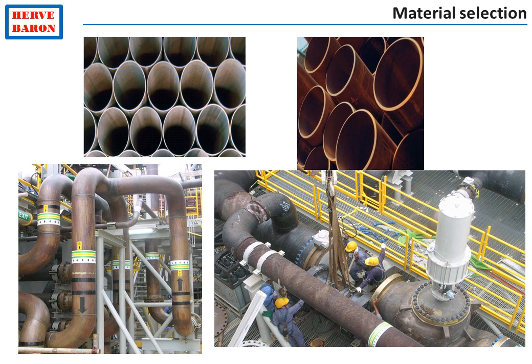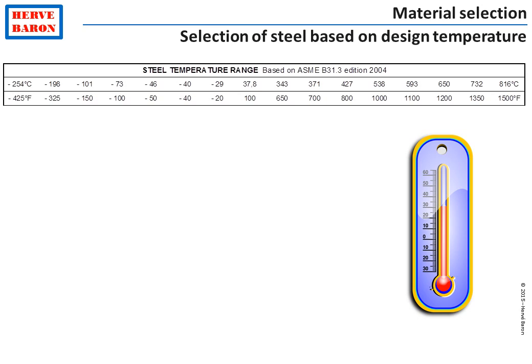The second parameter that comes into play when selecting material of construction is the fluid temperature. Both high and low temperatures must be taken into account. Carbon steel is suitable for a temperature range between minus 29°C to 427°C only. Below that, low temperature carbon steel and then alloys up to stainless steel need to be used. Above that, stainless steels also have to be used.